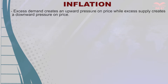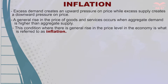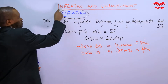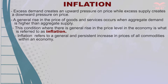Excess demand creates upward pressure on price, while excess supply creates downward pressure on price. Something that drives up prices leads to a general rise in the prices of goods and services when aggregate demand is higher than aggregate supply. This condition — where there is a general rise in the price level in the economy — is what is referred to as inflation.